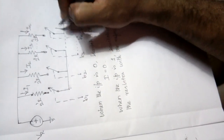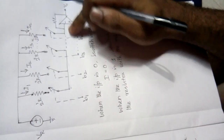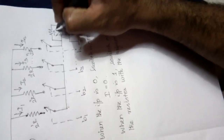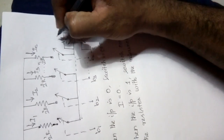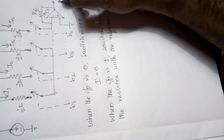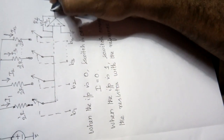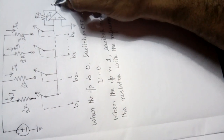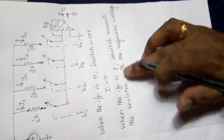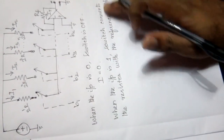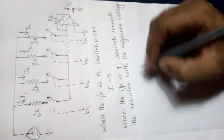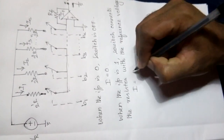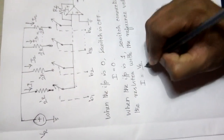Since the op-amp has high input impedance, the total current IT flows through RF. Here we get the output voltage. When the input is 1, the switch connects the resistor with the reference voltage, so the current I will be V_r divided by R.